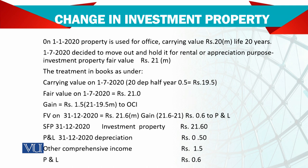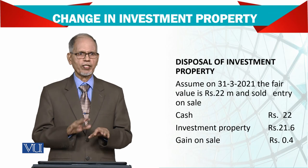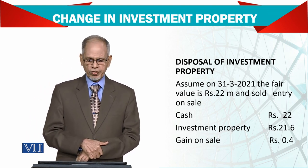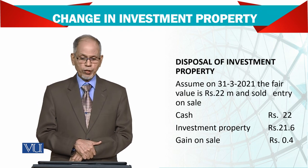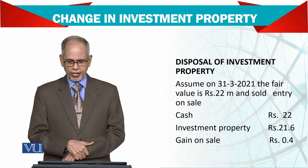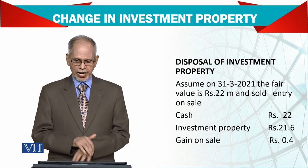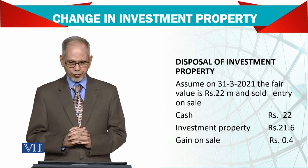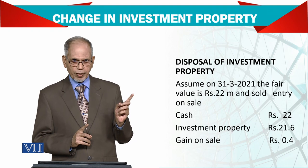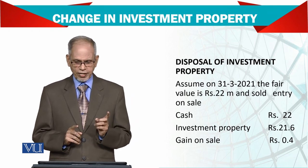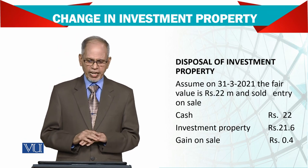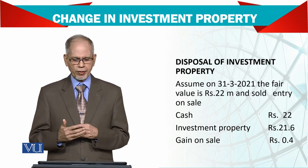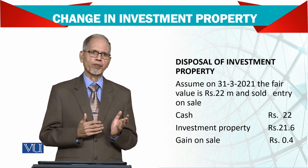Now let's see if eventually we sell this asset — if we dispose of this property. We are disposing of it on 31st December 2021. The value is 22 million, sold at 22 million. You debit cash 22 million. The investment property in the last year's balance sheet was 21.6 million. So there is a gain of 0.4 million. This gain will go to the income statement. When you dispose of an investment property, the gain or loss will be taken to the profit and loss account.